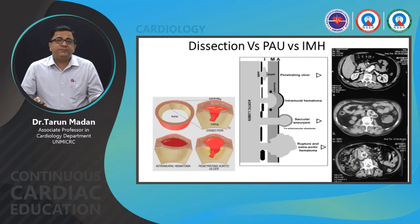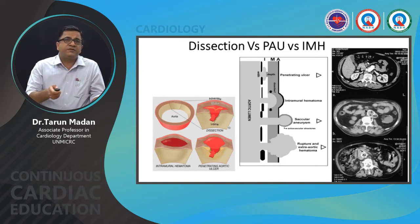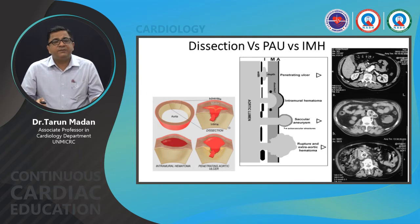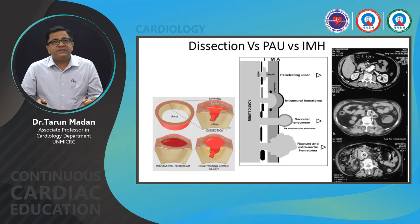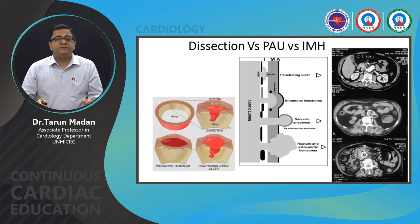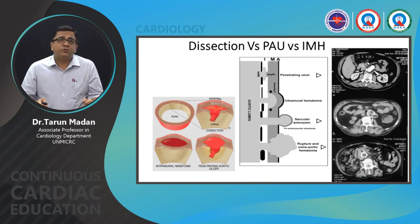In type B aortic dissection and related pathologies: aortic dissection involves a tear in the intima through which blood flows into the media. Penetrating aortic ulcer extends to the media only. Intramural hematoma extends into the media and is constrained by the adventitia. Further progression causes the adventitia to bulge, forming a saccular aneurysm; if it ruptures, an extra-aortic hematoma results.